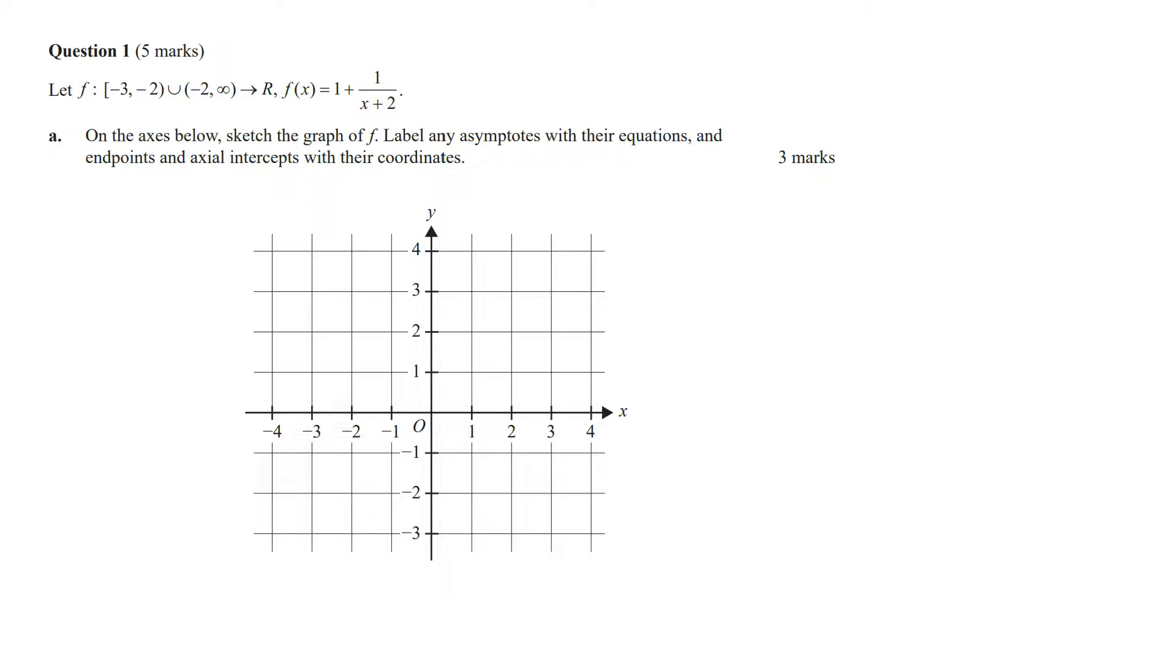In this video, I'm going to show you how to answer the 2023 VC maths methods sample exam 1, question 1. Let the function f, where f(x) is defined by the given rule. On the axis below, sketch the graph of f, label any asymptotes with their equations, and endpoints and actual intercepts with their coordinates.